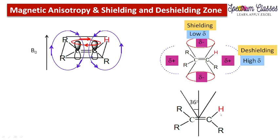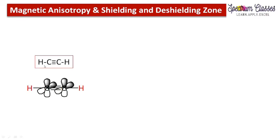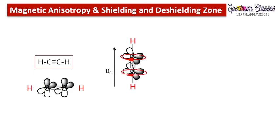The next example is the alkyne molecule. Here is the alkyne molecule and its orbital structure. Since it has a triple bond — which has two pi bonds formed by sideways overlapping of p orbitals — we have this type of orbital structure. Some students ask: when we place other molecules perpendicular to B0, why do we place this molecule in the parallel direction? The reason given in many textbooks is that the circulation of electrons in the acetylene molecule occurs on individual atoms.